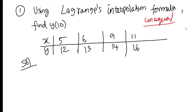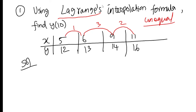In Newton's forward and backward, there is an equal interval. For example, if the differences are equal — like 1, 2, 3 — those are equal intervals, and we apply Newton's forward or backward. But if the intervals are unequal, then we use the Lagrange formula. So if you get data with unequal spacing, you apply Lagrange.